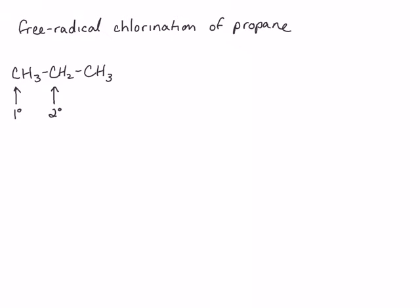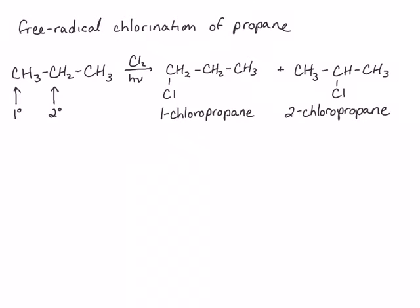Chlorination at one of these two positions will give us two different products. Chlorination at the primary position gives us 1-chloropropane, and chlorination at the secondary carbon gives us 2-chloropropane. Based on random chance, we would expect 75% of the 1-chloropropane and 25% of the 2-chloropropane, purely because there are six primary hydrogens and only two secondary hydrogens that can be replaced.